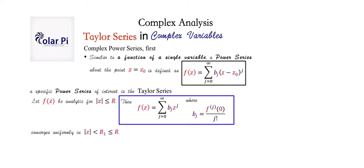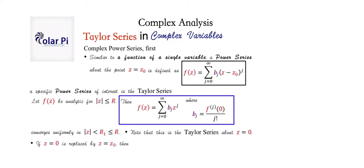The Taylor series given here is centered at z equals z sub zero, and the convergence is in and on the circle given here. If we have the Taylor series centered at z equals z sub zero instead of z equals zero, the appropriate replacement is having z minus z sub zero to the power j instead of just z to the power j, and b sub j would be modified with z sub zero in place of zero. This is it as far as stating Taylor series in complex variables. Next we're going to prove it.